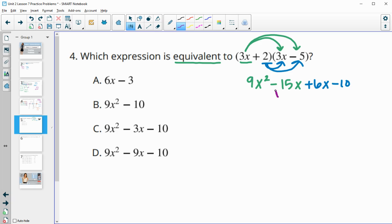I'm going to combine like terms in the middle. So I've got 9x squared, negative 15x and 6x is negative 9x, and we still have that negative 10. Now we're just going to match it to the answer. It's definitely not A. B is missing the middle term. C has the wrong middle term. So D has all of the terms the same. D is the equivalent expression.